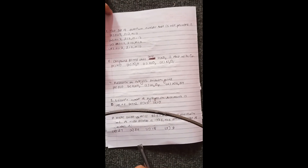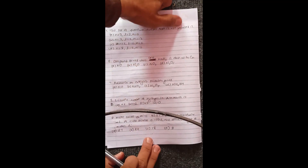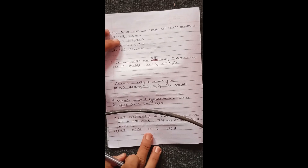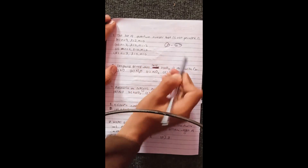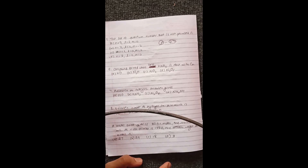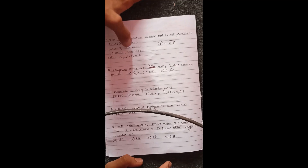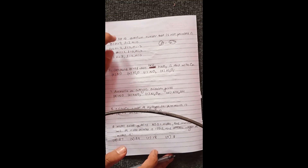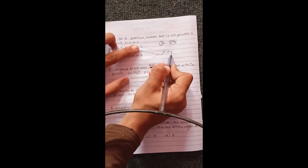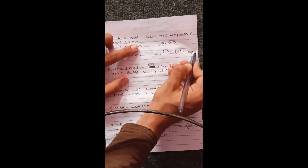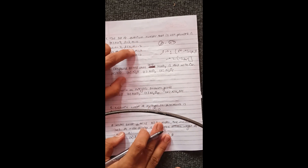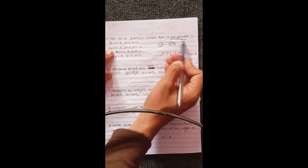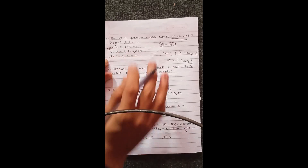Question five. The set of quantum numbers that is not permitted. The principal quantum number n will be equal to 0 is not valid. Checking: n=0, then l=0, ml=0, ms=+1/2 — this is a false set. Option B is the answer.